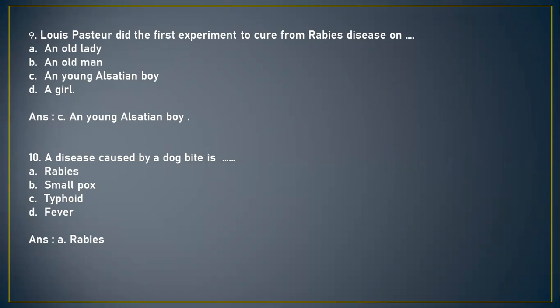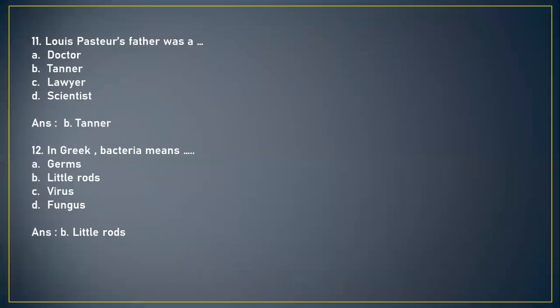Next: A disease caused by a dog bite is — A) rabies, B) smallpox, C) typhoid, or D) fever. The answer is option A, rabies. Next question: Louis Pasteur's father was a — A) doctor, B) tanner, C) lawyer, or D) scientist. The answer is B, tanner.